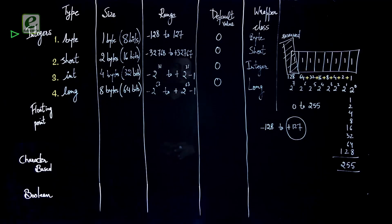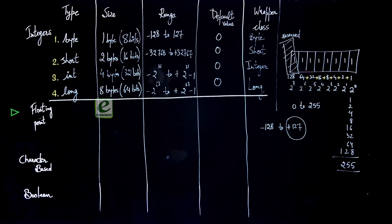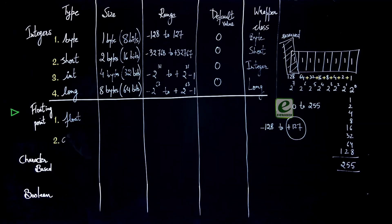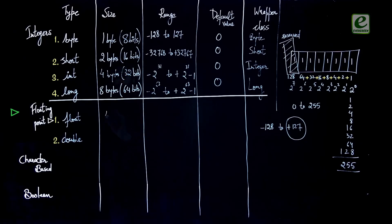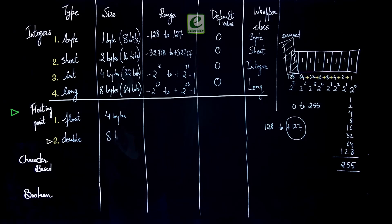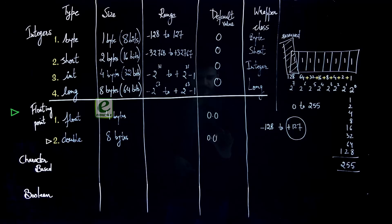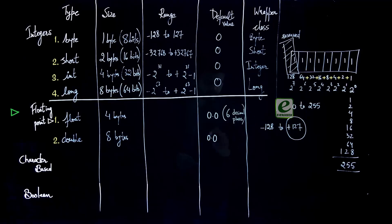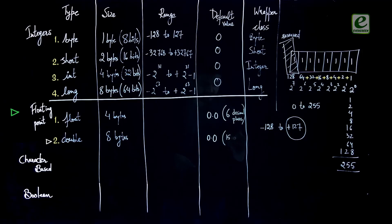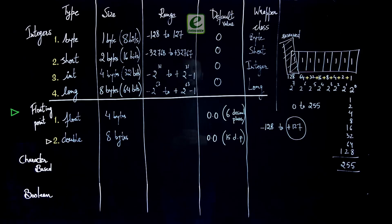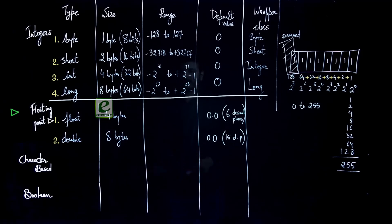Now let's move to the second category: floating point. Floats are of two types — float and double. The size for float is 4 bytes and for double is 8 bytes. The default value for both is 0.0. The precision for float is 6 decimal places and for double is 15 decimal places. The wrapper class for float is Float and for double is Double.